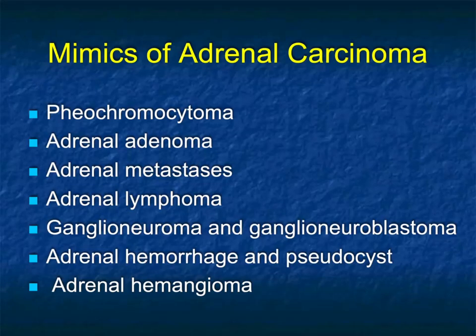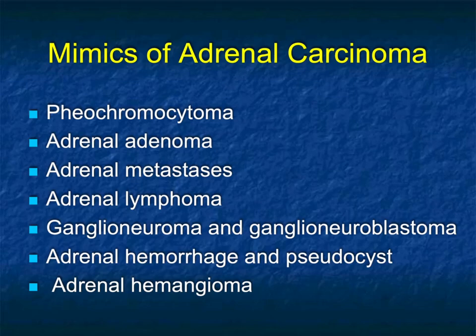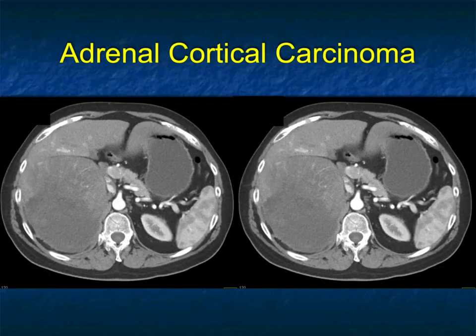In terms of mimics of ACC: large adenomas, hemorrhage, ganglioneuroma, and pheochromocytomas that are not very vascular can be an issue. Metastasis — particularly tumors like hepatoma and melanoma which give large mets — can be problematic. Adrenal lymphoma, particularly primary, gives large adrenal lesions though often bilateral. Occasionally hemangioma, though that is rare.